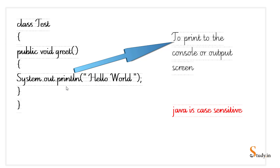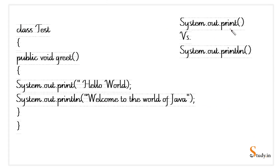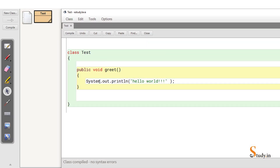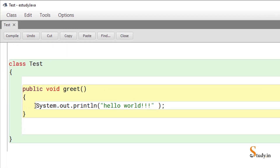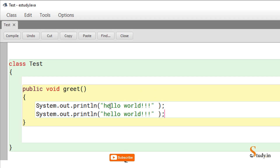System.out.println gives output on the output screen or console. Now let's explore a slightly different example — we have two lines of code: 'System.out.println("Hello World")' and then 'System.out.println("Welcome to the world of Java")'. We'll understand the difference between 'print' and 'println' through this program.